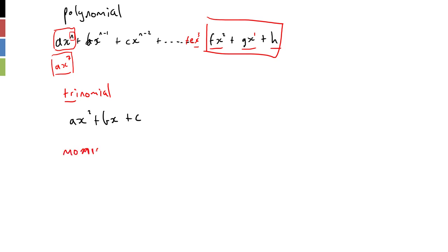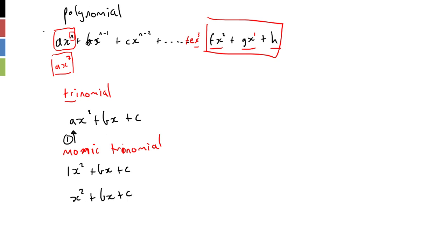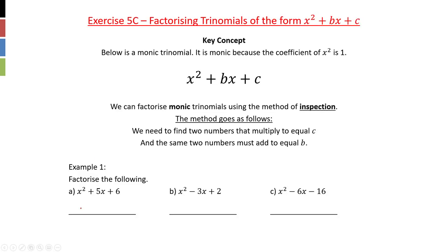Then we're going to look at a monic trinomial. What does monic mean? Monic means that the first term has a coefficient of one — so it's going to be 1·x^2 plus bx plus c. And we know from basic algebra that we don't actually write the one, so monic trinomials are written as x^2 plus bx plus c. It's a polynomial of order two and it's monic because the coefficient of x^2 is one.